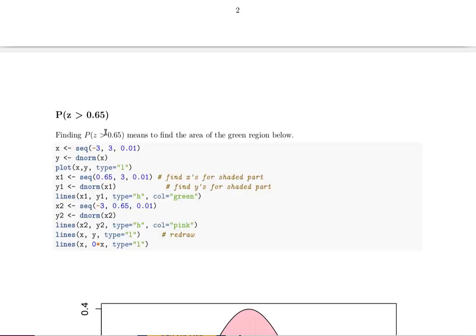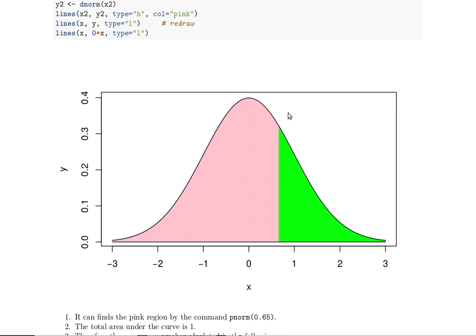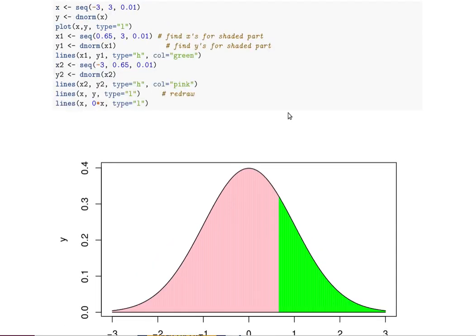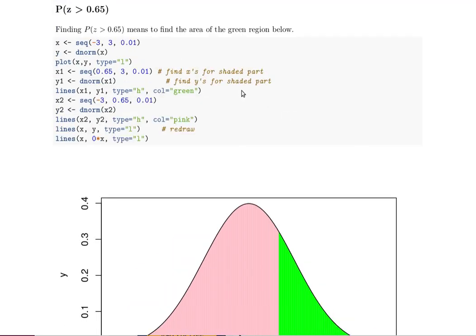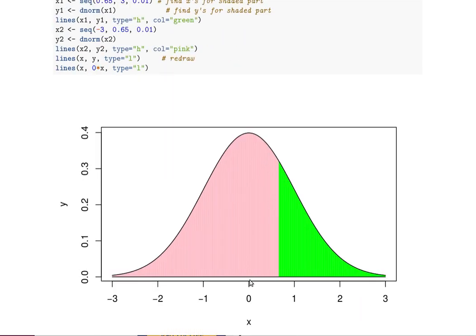Okay, so what are we going to do when we need to find the probability that Z is bigger than some particular value? Well here we're looking at the probability that Z is bigger than, notice it's 0.65. There's 0.65, it's a little more than half, it's a little more than halfway between 0 and 1.